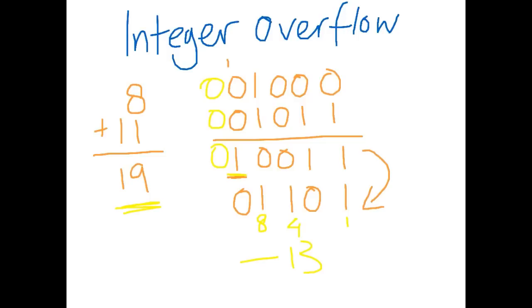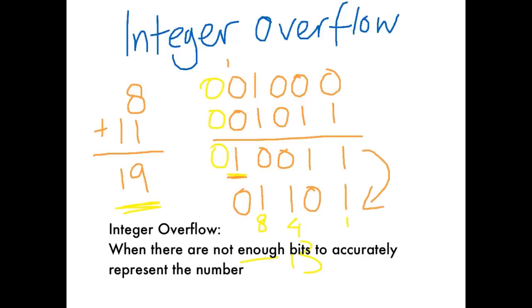An integer overflow occurs when there are not enough bits to accurately represent the number. Use your new-found skills in binary addition and subtraction and test them out. Always check your answers against a decimal solution to verify you are doing the right thing — if you've missed any steps, go back and follow each explanation step by step.